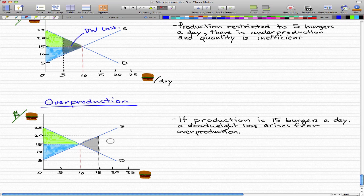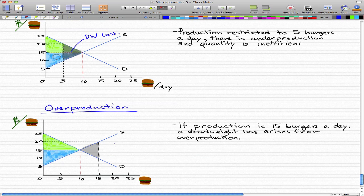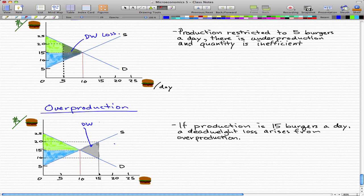So in our underproduction, the producers were making it at $10, but the consumers were valuing it at $20, and that creates a deadweight loss. So let's just label this as DW loss. So that's overproduction and underproduction.